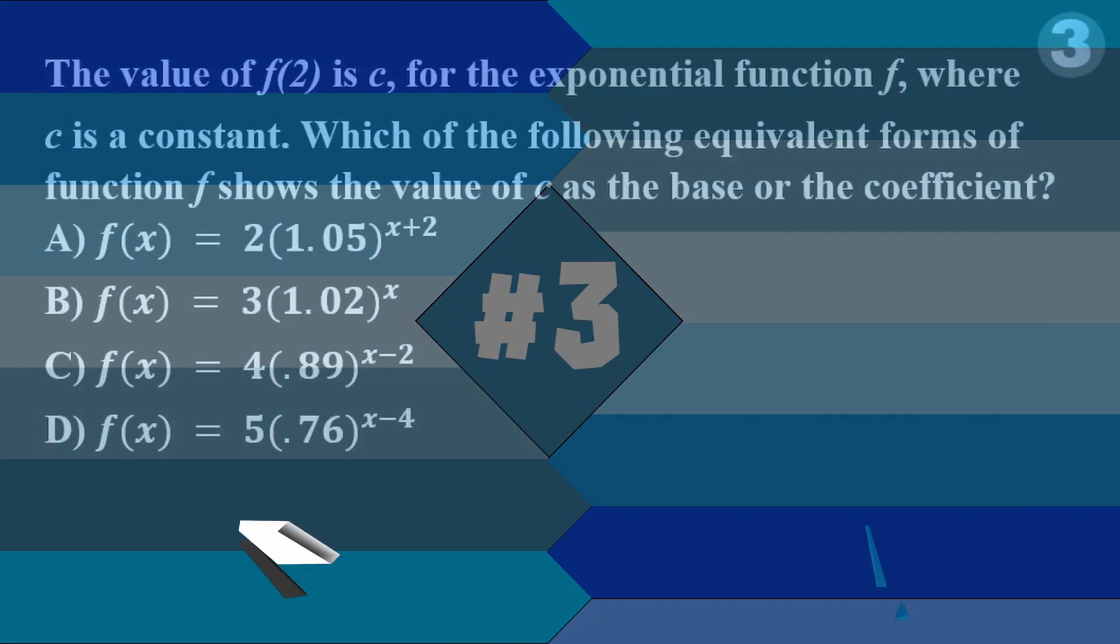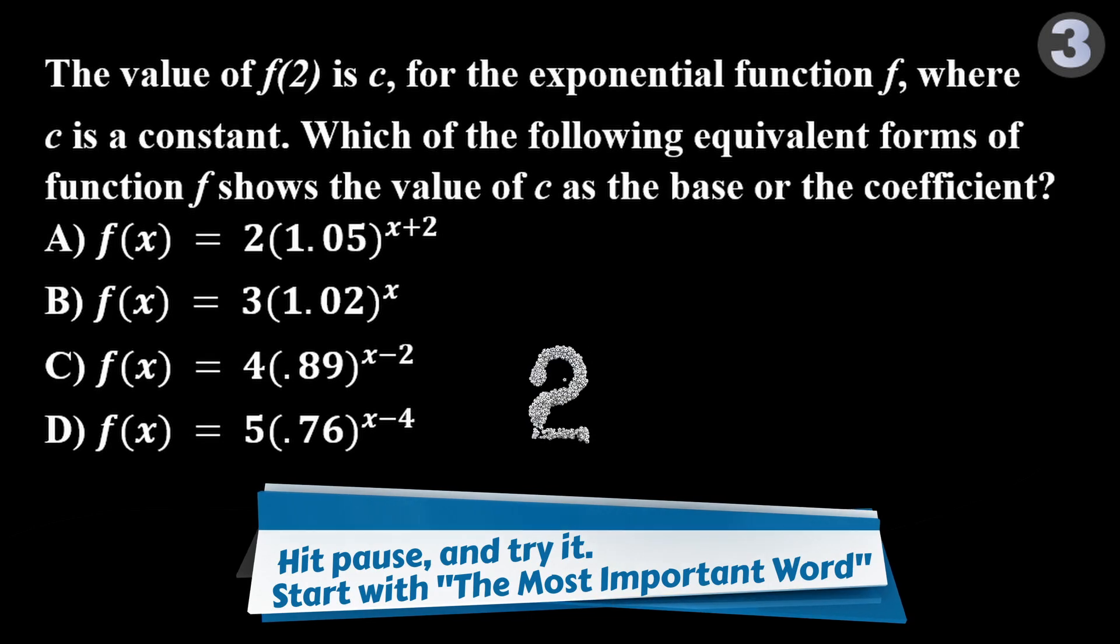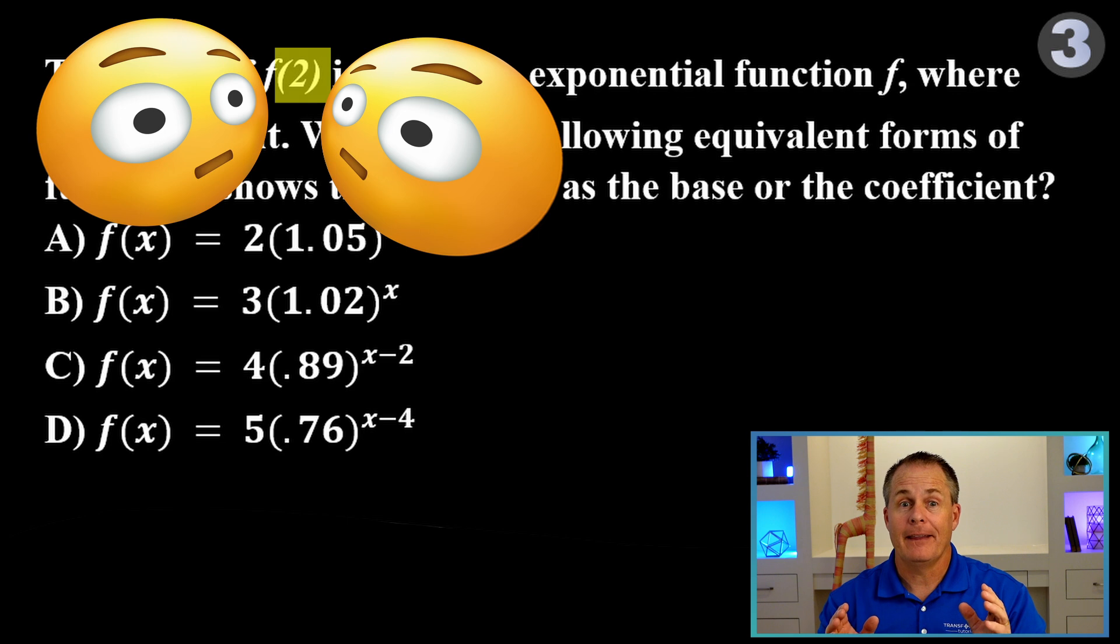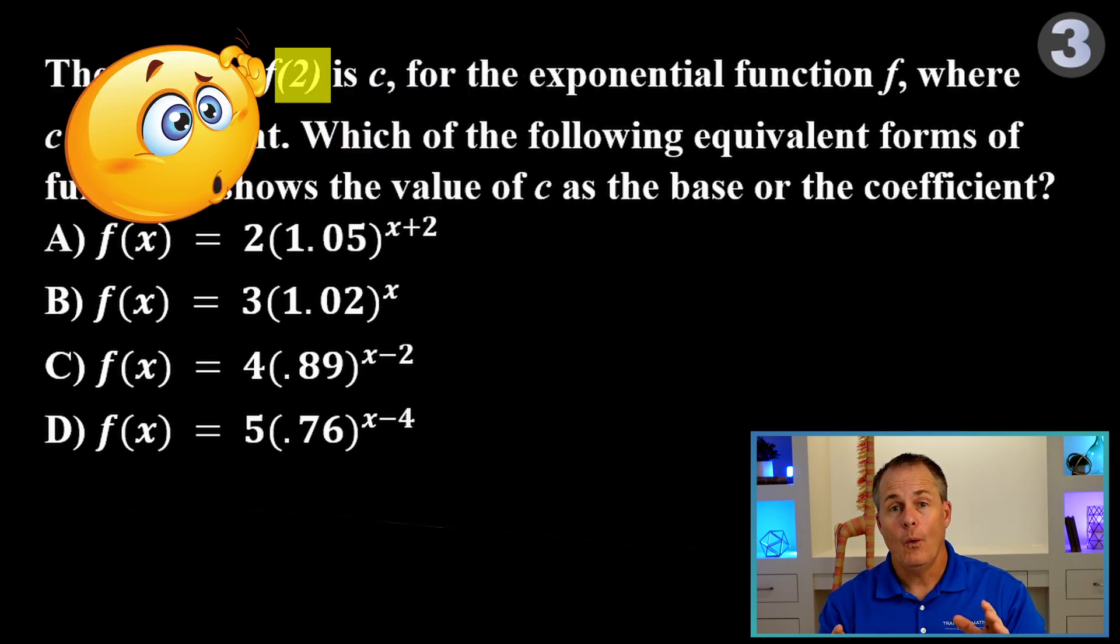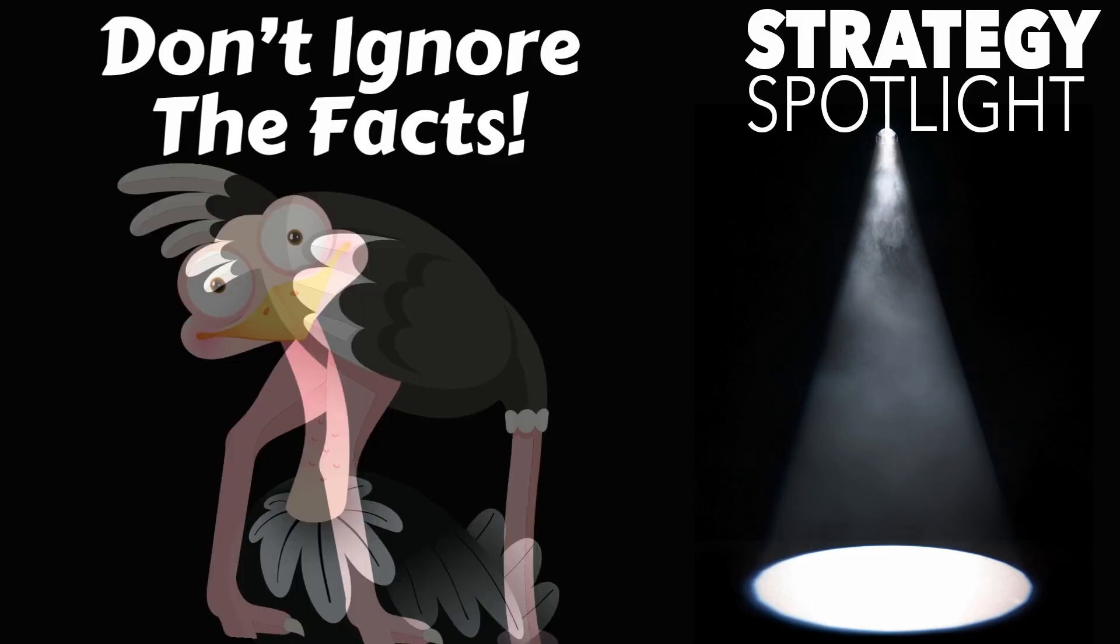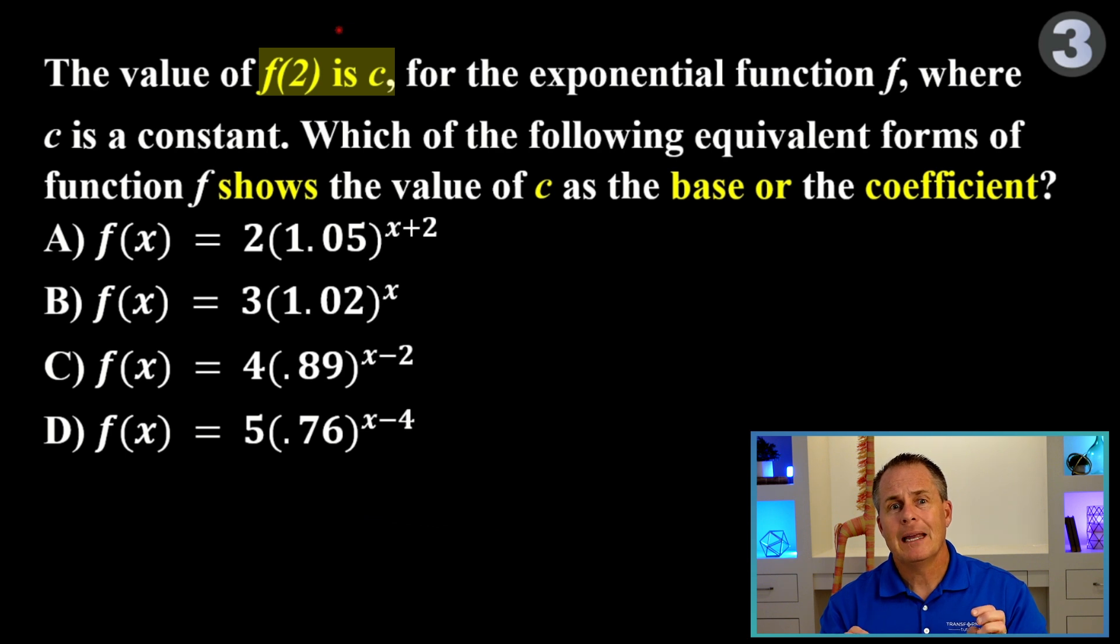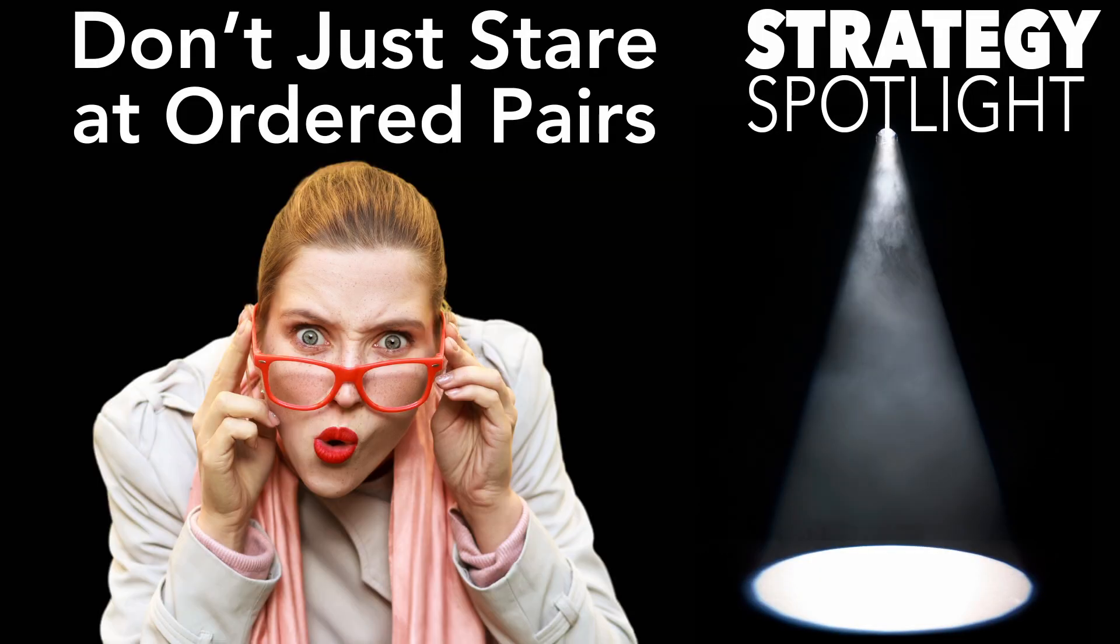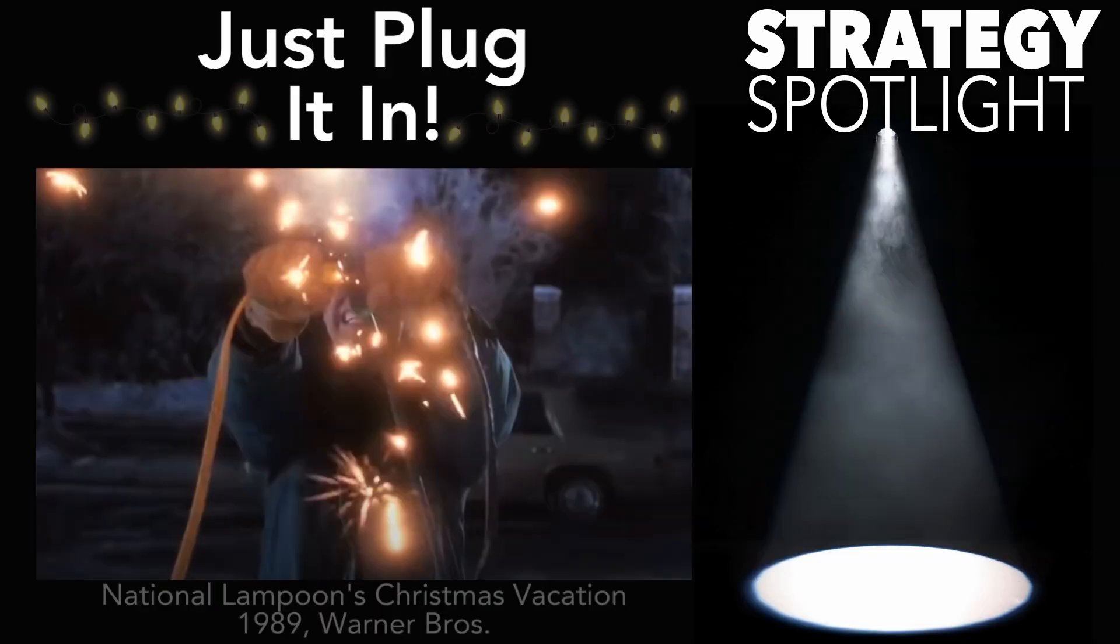Now, tap pause to try problem 3 on your own. Whenever you see a number in a math problem, your eyes should really focus in on that number and ask yourself, what is this doing here? I have a strategy for this that I like to call every number has a purpose or don't ignore the facts. So, if f(2) is c, what does that mean? That's an ordered pair in disguise. X is 2 and y is c. Well, don't just stare at ordered pairs. What do we do with them? Just plug them in.